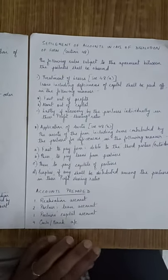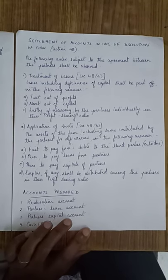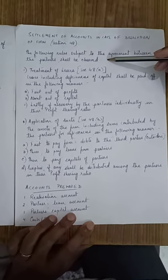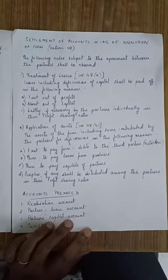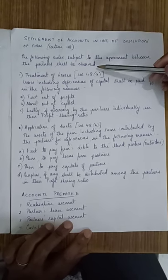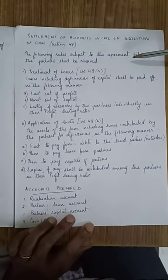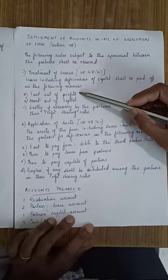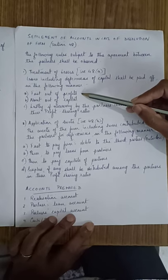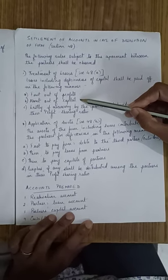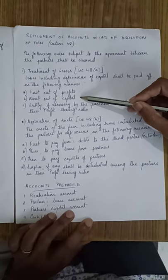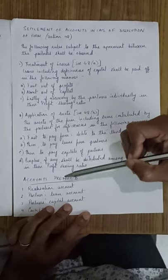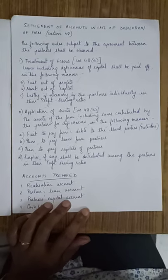Now let's come to settlement of accounts in case of dissolution of a firm under Section 48. The following rules, subject to agreement between the partners, shall be observed. First, treatment of losses under Section 48(a): losses including deficiency of capital shall be paid off first out of profits; if profits are insufficient, then out of the capitals of the partners; and lastly, if capitals are also insufficient, by the partners individually in their profit sharing ratio from their private property.